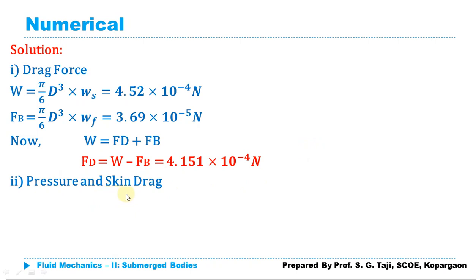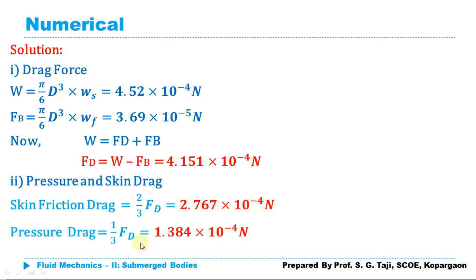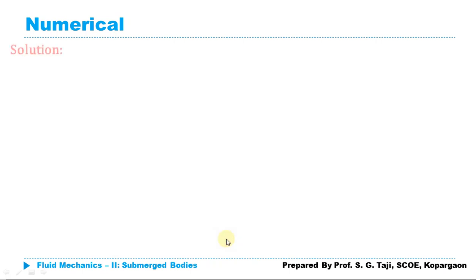By Stokes law, the pressure drag is one-third of total drag, and skin friction drag is two-thirds of total drag. So skin friction drag = (2/3) × 4.151 × 10⁻⁴ = 2.767 × 10⁻⁴ N, and pressure drag = (1/3) × 4.151 × 10⁻⁴ = 1.384 × 10⁻⁴ N.